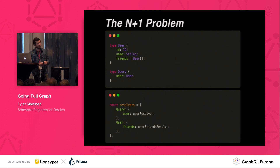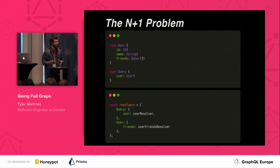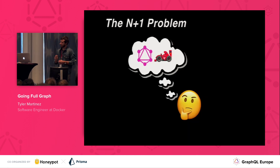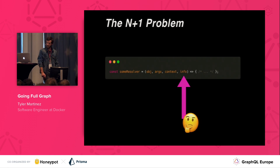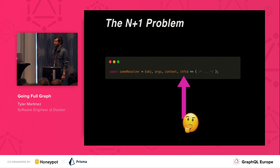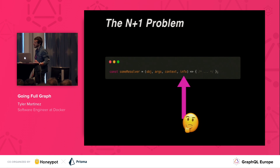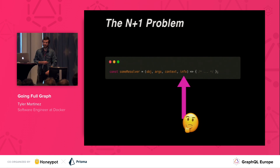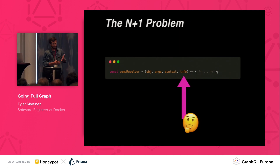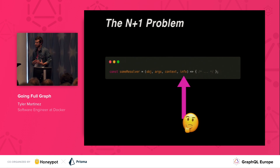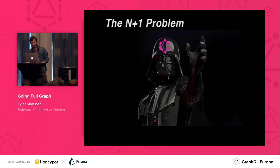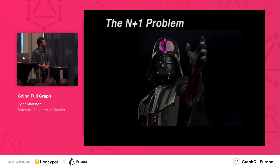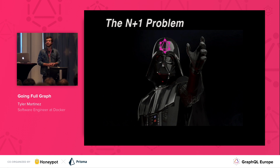Instead of having each resolver make its own request, we should be able to just make a single one using features like SQL joins to get all the data at once. How do we solve this and build truly performant GraphQL servers? The answer is not so simple. You might have noticed this argument that gets passed to the resolver functions at the very end: info. This argument contains an AST representation of the query with all the info we could possibly need to resolve our data, just not in a very easy-to-use format. So instead of writing resolvers, we just need to write a single function that takes info, does something magical to it, and returns all the data for that query.